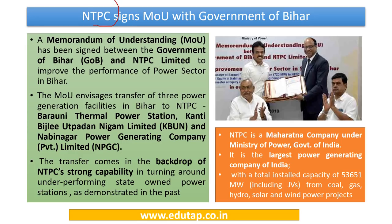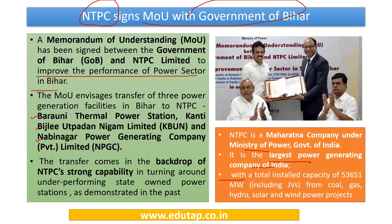NTPC has recently signed an MOU with the Government of Bihar to improve the performance of the power sector in Bihar. The MOU envisages transfer of three power generation facilities — Barauni Thermal Power Station, Kanti Bijali Utpadan Nigam Limited, and Nabinagar Power Generation Company Limited — to NTPC. NTPC is a Maharatna company under the Ministry of Power and is India's largest power generating company.